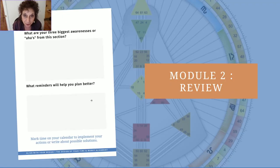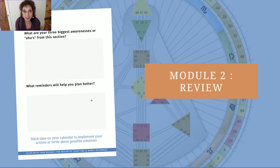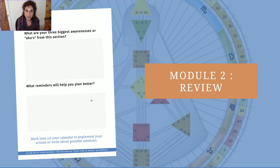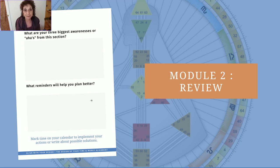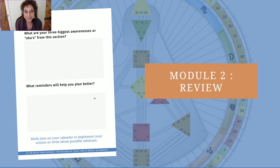We've come to the end of Module 2, around time and energy management. I invite you to jot down what your awarenesses are, any aha moments, any insights. What are the things you want to keep top of mind? What planning strategies are you going to test out first, and track that — put it on your calendar. I tried time blocking for one week, I tried setting a timer for one week — whatever the strategy is, just see if it really works for you. I invite you to write your insights and revisit this module as often as you need to help you stay on track. I look forward to seeing you in the other modules.